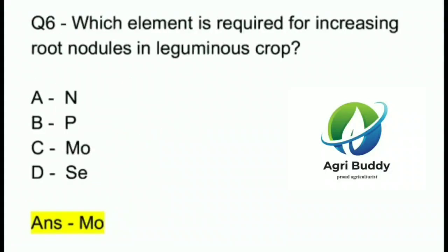Question 6. Which element is required for increasing root nodules in leguminous crops? A. Nitrogen. B. Phosphorus. C. Molybdenum. D. Selenium. And the answer is Molybdenum.